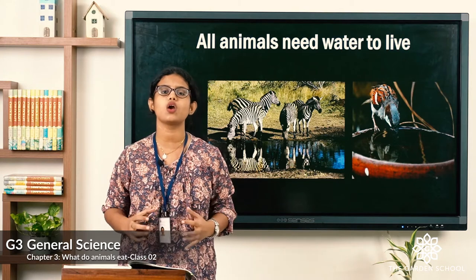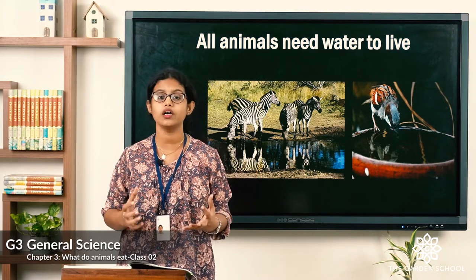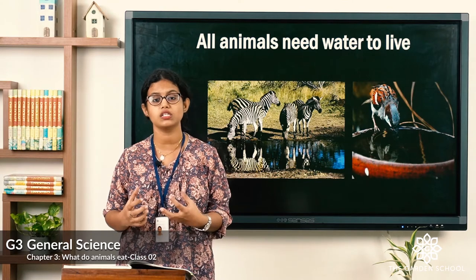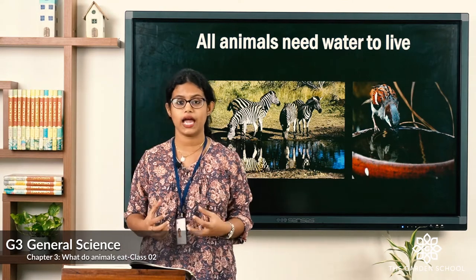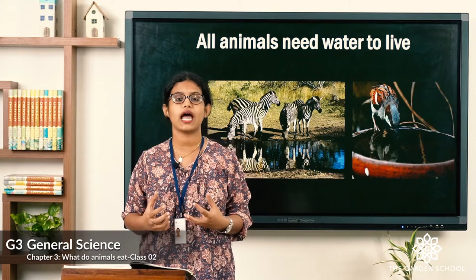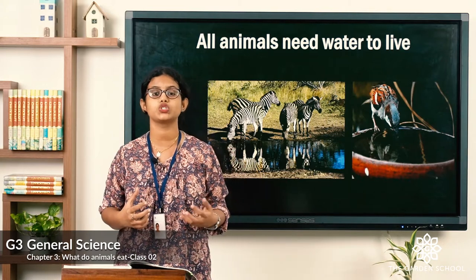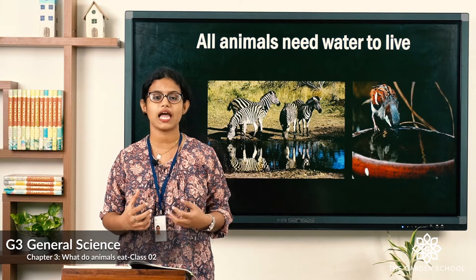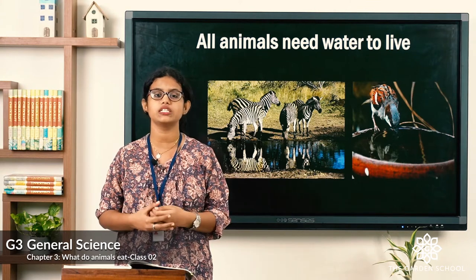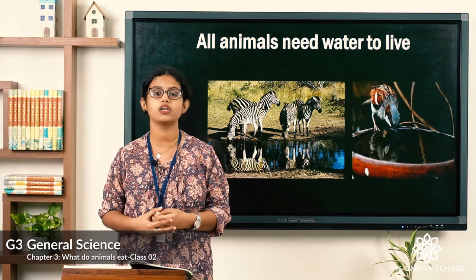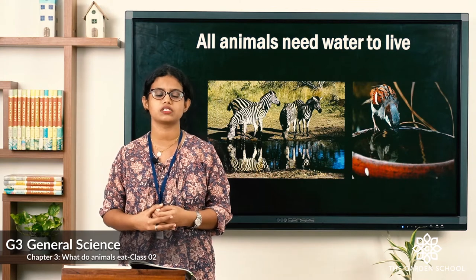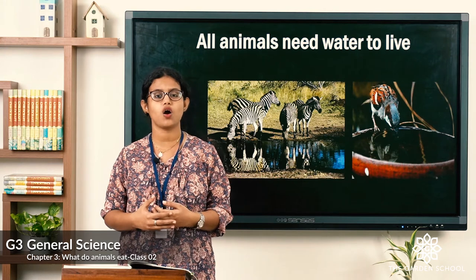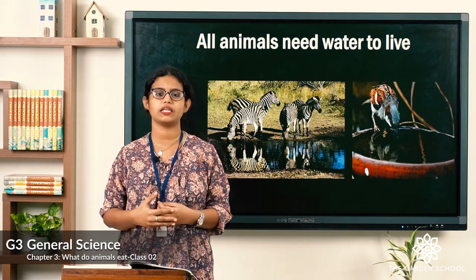That is all about this chapter. What did we learn? We learned about the classification of animals based on their eating habits: animals which eat only plants are herbivorous, animals which eat other animals are carnivorous, and animals which eat both plants and animals are called omnivorous animals.